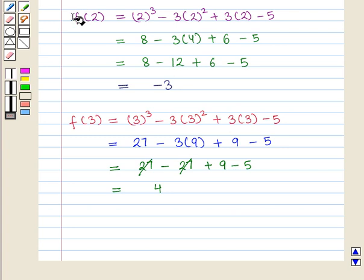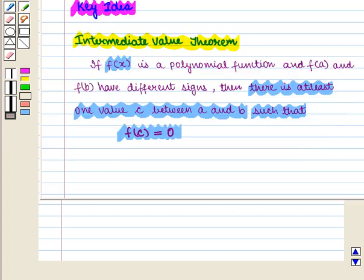Here we see that f(2) = -3 and f(3) = 4, and there is a sign change between f(2) and f(3). Then, according to the intermediate value theorem given in the key idea, there is at least one value between 2 and 3 that is a zero of this polynomial function.